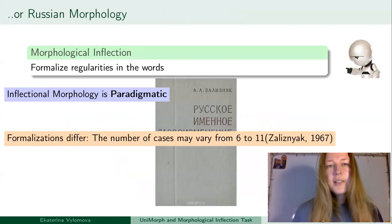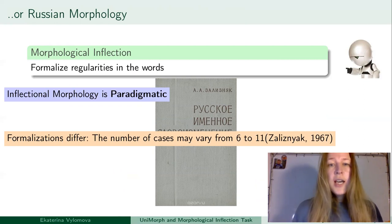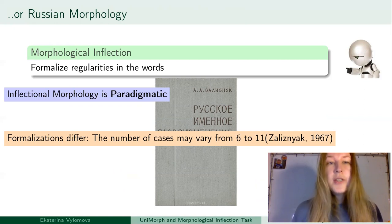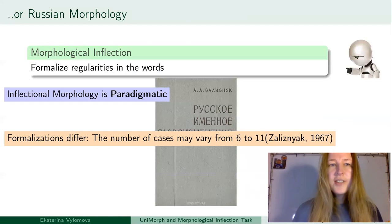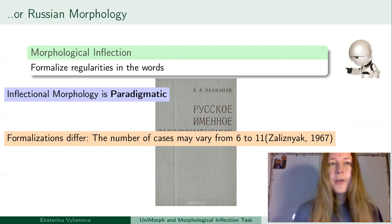On the other hand, if you look at Russian morphology, Russian linguists had formed their own traditional description of language. There is a famous Russian linguist, Andrey Zaliznyak, who described the Russian declension system. We see that even within Russian, there are different approaches to the description of language.